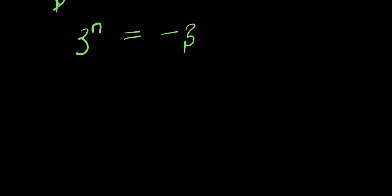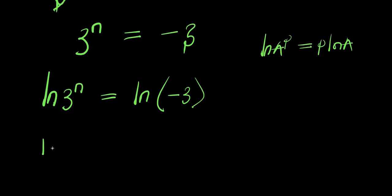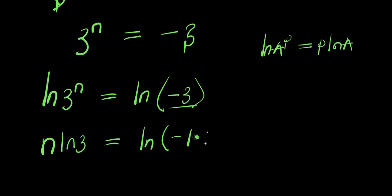From here I can apply natural log. I have natural log of 3 to the power of n equals natural log of negative 3. I can express negative 3 as negative 1 times 3, so natural log of negative 3 becomes natural log of negative 1 times 3.